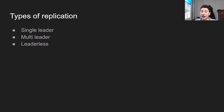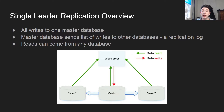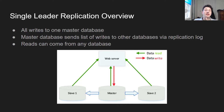Types of replication: single leader, multi-leader, and leaderless. In this video I'll be addressing single leader. The overview for that is basically: all writes go to one leader database, and the leader can send a list of writes to other databases via something called a replication log. The reads can also come from any database, increasing availability.